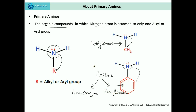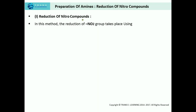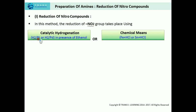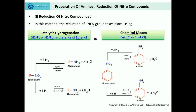Aniline is also known as aminobenzene or phenylamine. Now let's start with the preparation of primary amines using nitro compounds. In this method, the reduction of nitro groups takes place using hydrogen and platinum, or hydrogen and platinum in the presence of ethanol — this is called catalytic hydrogenation — or using iron and hydrochloric acid, or tin and hydrochloric acid, by chemical means.